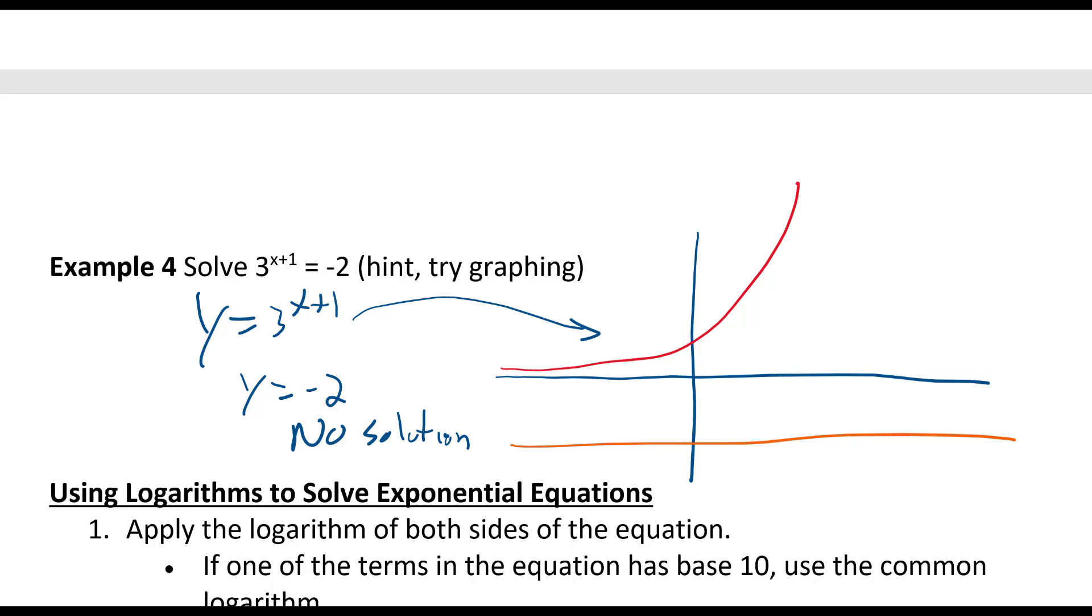You can also reason it out: the range for y equals 3 to the x plus 1 is greater than 0, so it's never going to be negative 2. And that's it for solving exponential equations.